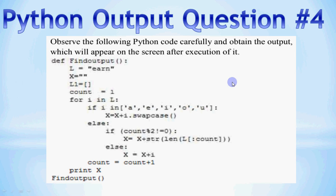Hi all, this is Anjali and in today's lesson we are going to do another output question for Python. We have done three questions from Python and this is the fourth question in the playlist. You have been given a string and a list, and we are working on the string and the list with the help of loops. You have to tell us what is the output of the loop.